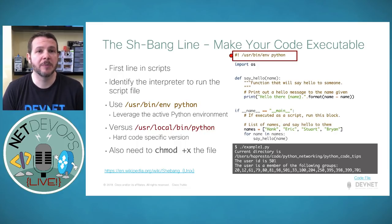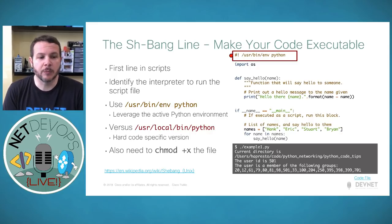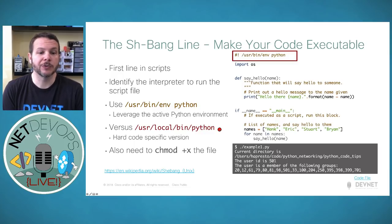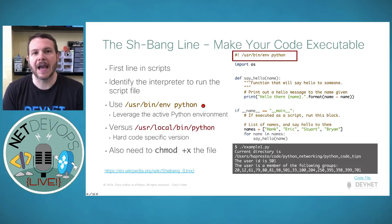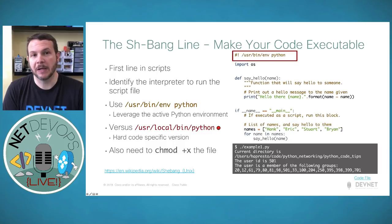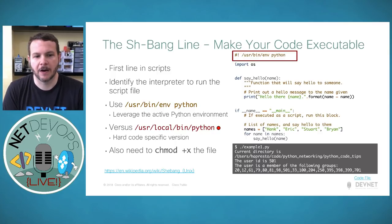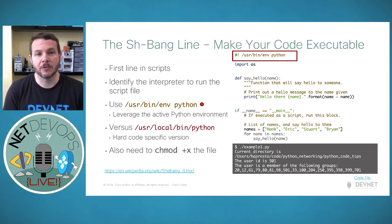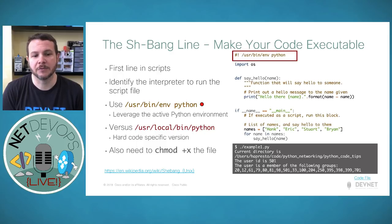The shebang line is called that because of the hash symbol and the exclamation point, often called 'bang.' That first line identifies the actual program and interpreter your computer will use to run the script. I always recommend using `/usr/bin/env python` rather than `/usr/local/bin/python`, because `/usr/bin/env` leverages the active Python environment. If you've activated a virtual environment using a specific Python version, your script will run using the currently active interpreter rather than hard-coding to the system default.